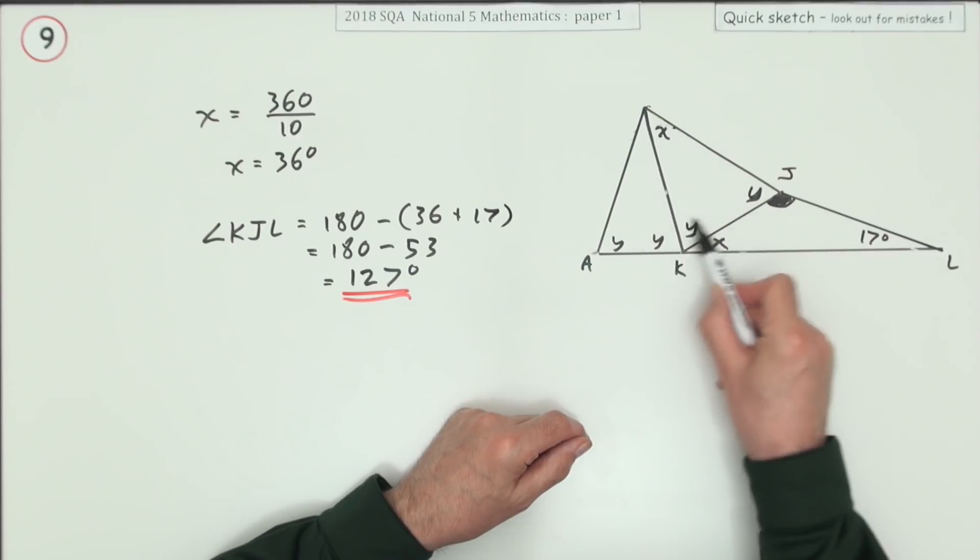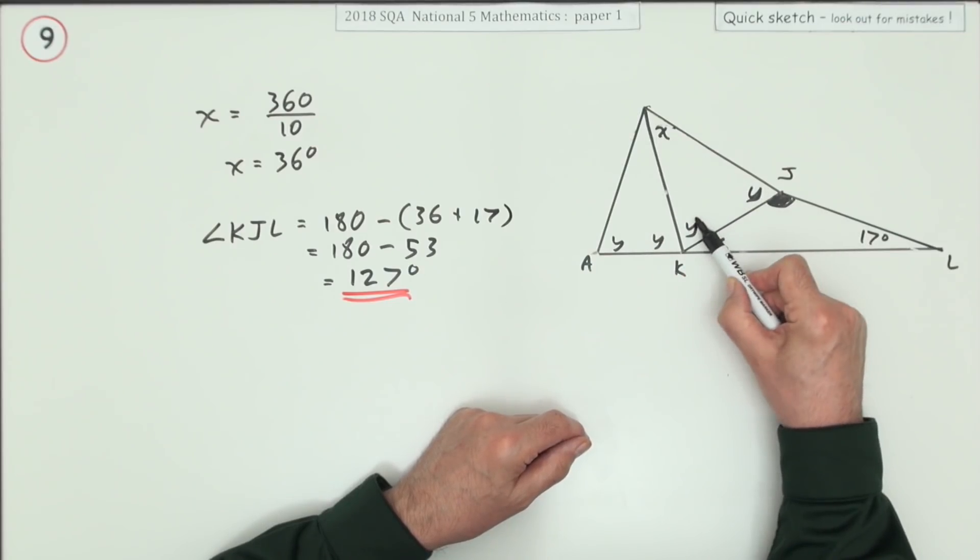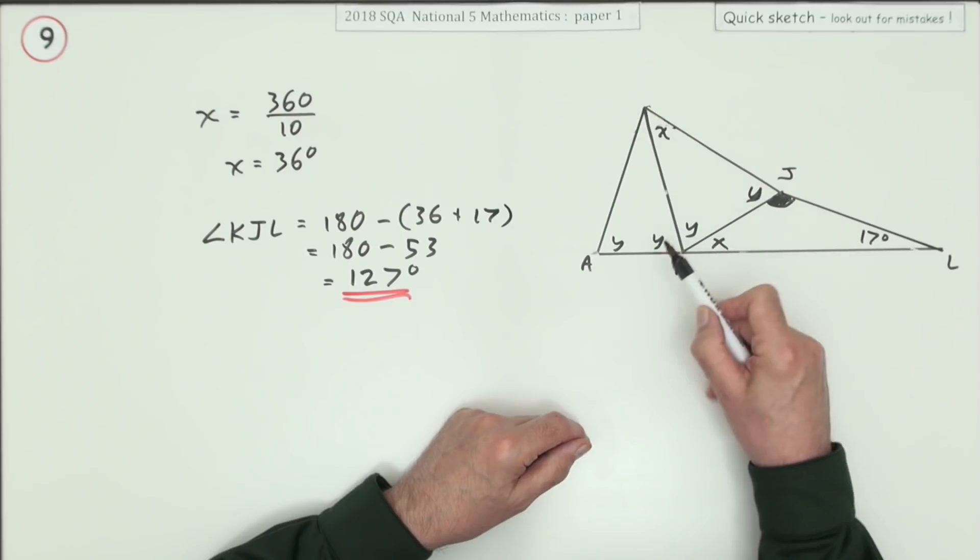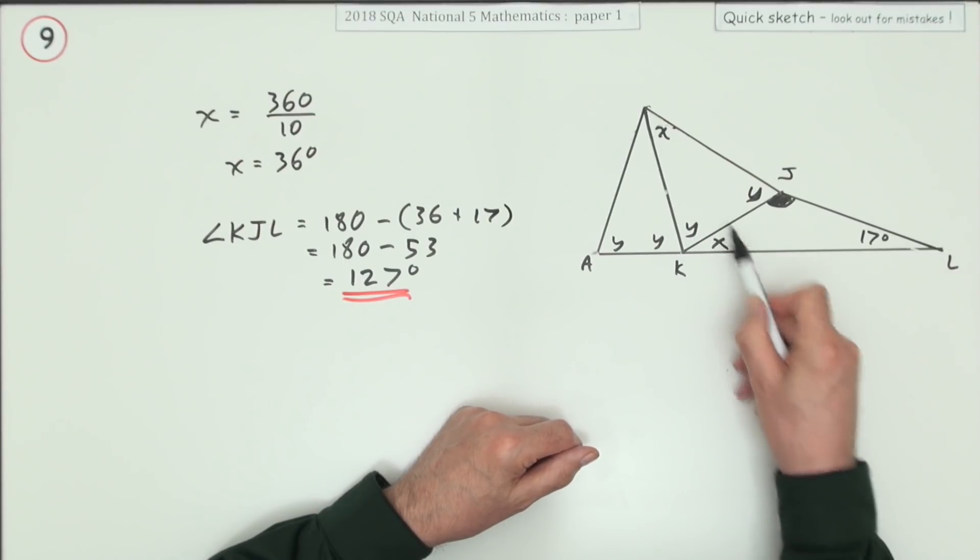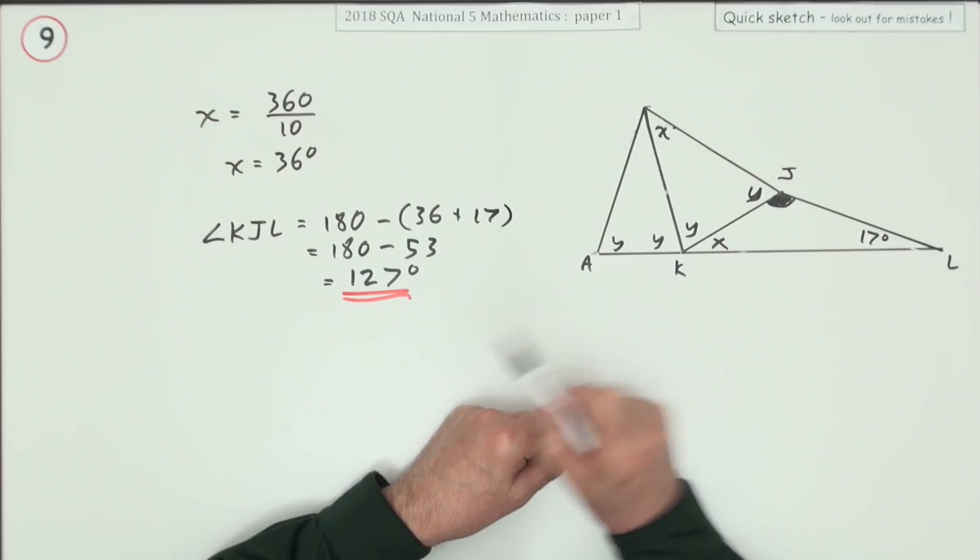You could work all the bits and pieces starting from your 36, take it from 180 and work out that individual one, then realize that's the same as that, so you add them back up. Then knowing what those two come to, you could take it away from 180 to find this. But a bit of forward planning lets you get there straight away.